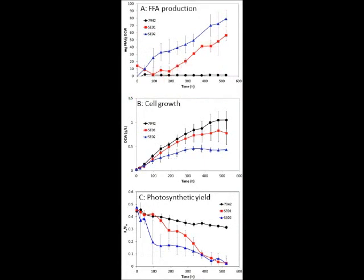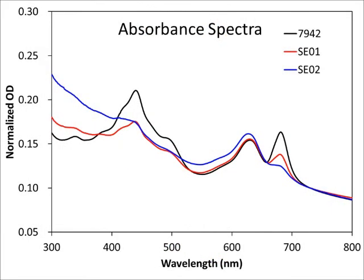While the engineered strains excrete free fatty acids, they have reduced final cell concentrations compared to the wild type, as well as reduced photosynthetic yields. Accompanying these changes, there is also a change in the photosynthetic pigments, with a selective degradation of chlorophyll A.